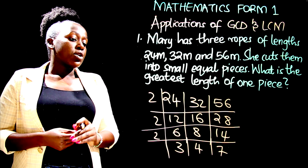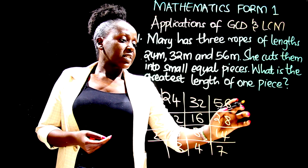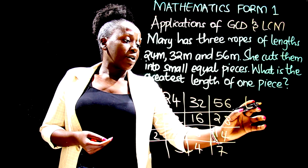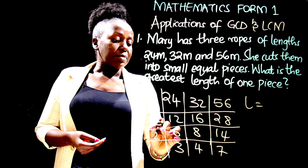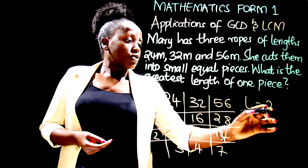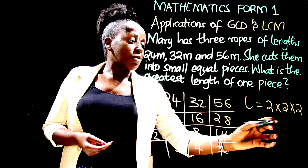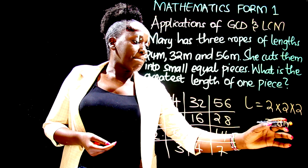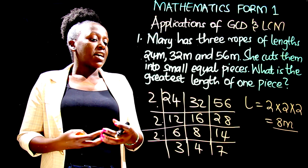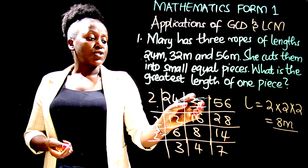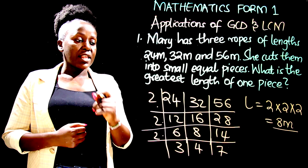Do we have a common divisor for 3, 4, and 7? No. So the GCD will be equal to — or rather the greatest length of the rope — will be equal to 2 times 2 times 2, which is equal to 8 meters. So you notice that 8 meters is a divisor of 24, 32, and 56.